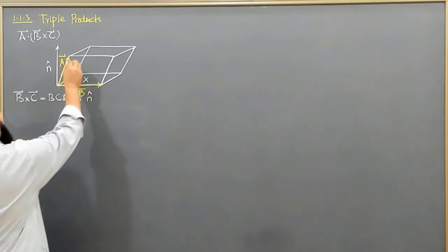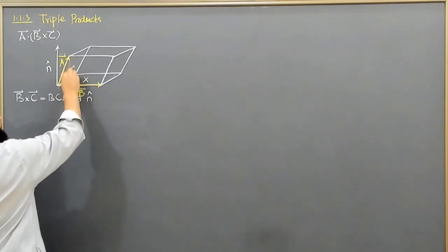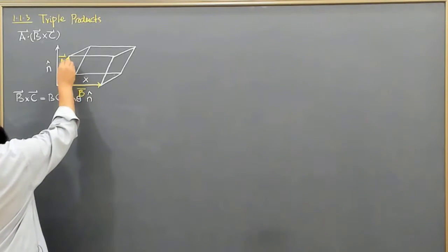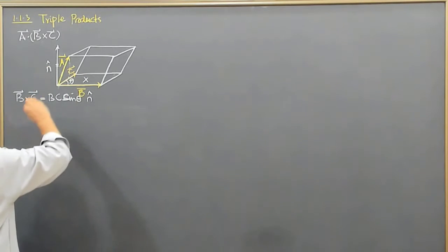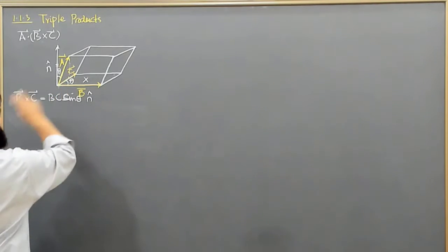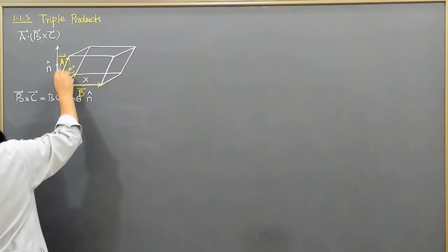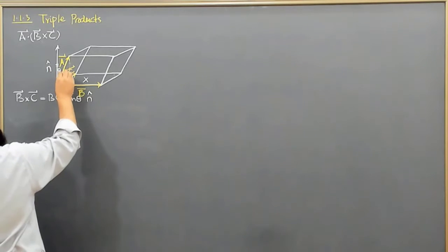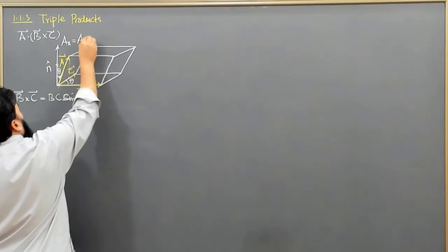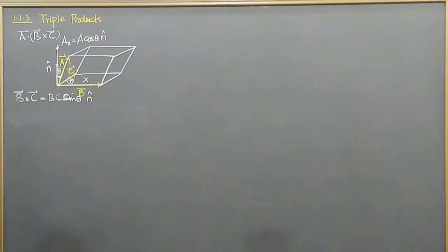If I look at vector A and resolve it into components, here are the components — one component and another component. These two components are in the same direction. If this is angle theta, which is exactly the same as this theta, then I resolve this into components. This component is basically AX, which is equal to A·cosθ, and it is along the N̂ unit vector direction.